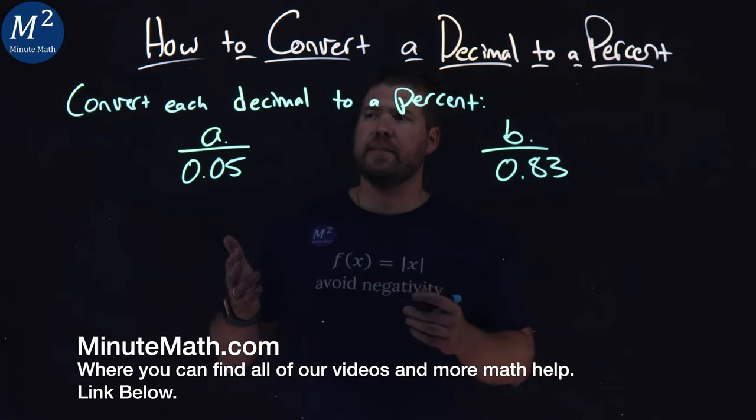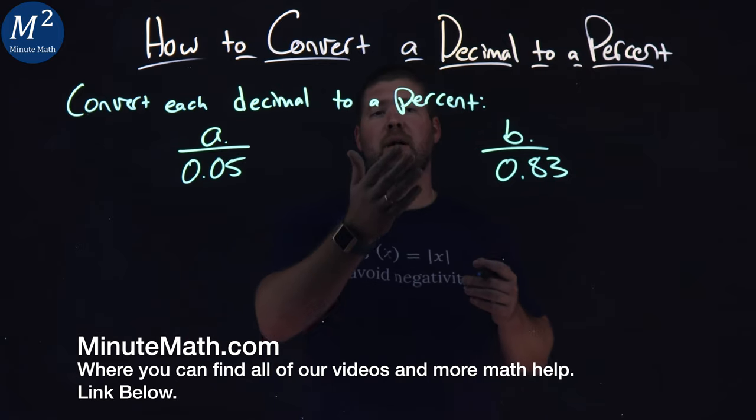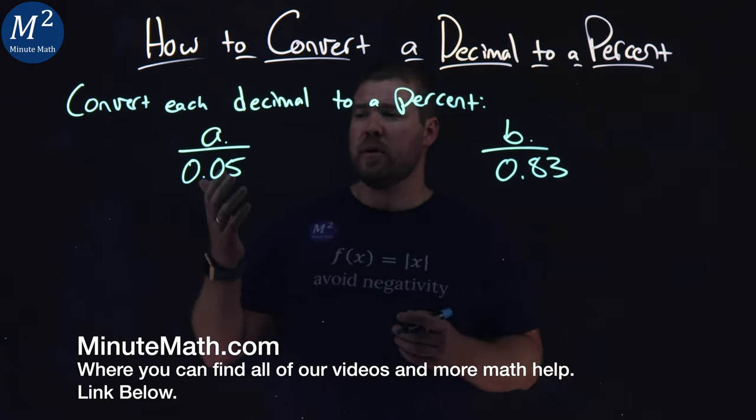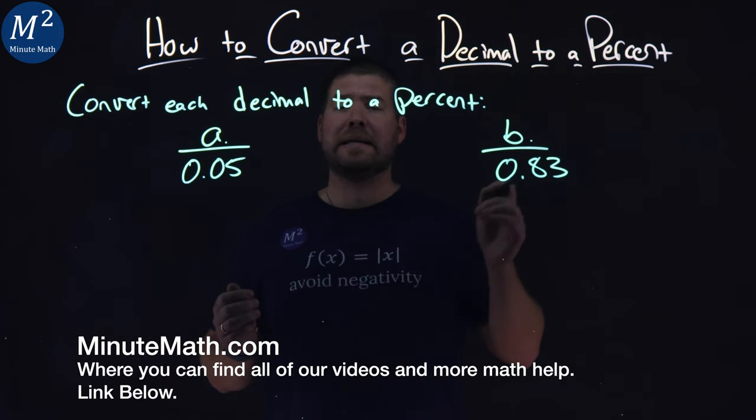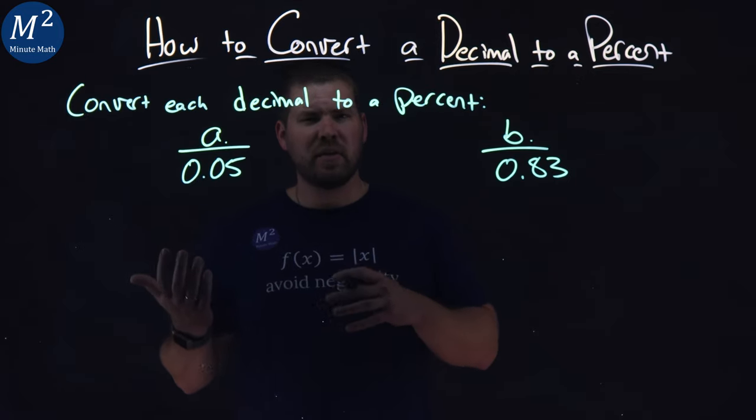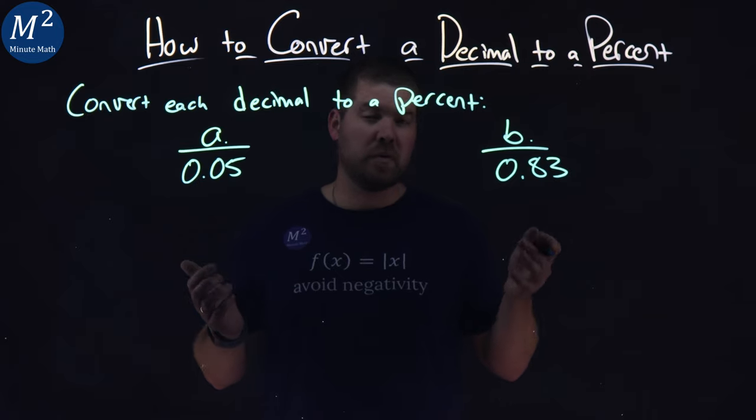We're given this problem right here. Convert each decimal to a percent. Our first one is 0.05 and the other one is 0.83. I'm going to show you the traditional way to do it and then the fast way to do each one of these problems.